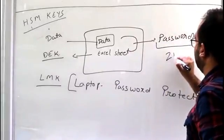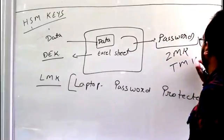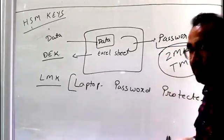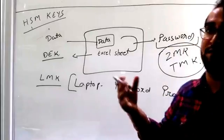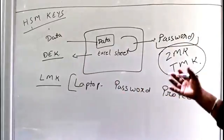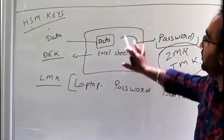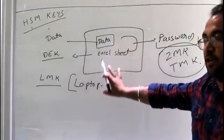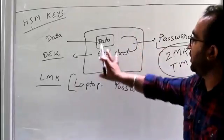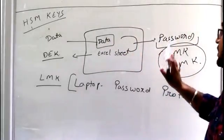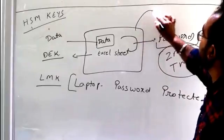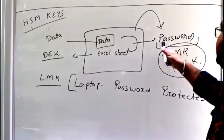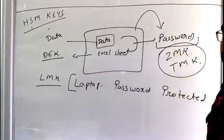So what exactly is this password used to protect the shared Excel sheet? This is the use of the Zonal Master Key, or we can say the TMK. Whenever we are sharing something with someone over the internet, the data was already secured inside the box, but since this data is going outside the box over the network, we are providing an additional layer of security — we are marking it with a password.